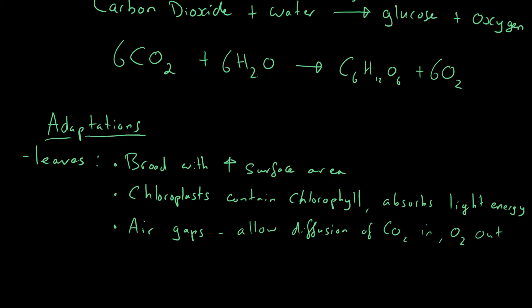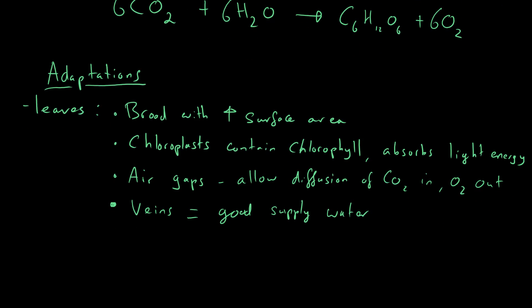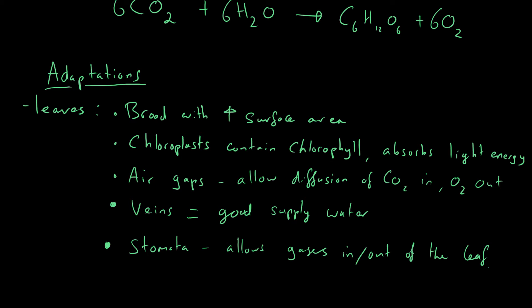Leaves also have veins, which means a good supply — not like us, they don't have blood. The veins supply water. They also have stomata, which allow gases in and out of the leaf. The air gaps are within the leaf, surrounding the cells, and they allow movement of CO2 and oxygen. The stomata allow CO2 and oxygen to get in and out of the leaf — there is a key difference there. So those really are the adaptations of the leaf.